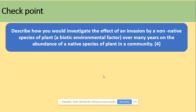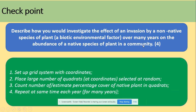Another question: describe how you would investigate the effect of an invasion by a non-native species of plant over many years on the abundance of a native species in a community. Note the keyword 'community' — that means all of the populations. You would set up a grid with coordinates, place a large number of quadrats at random, count the number or estimate the percentage cover of native plants in those quadrats, and repeat this over many years at the same time each year.